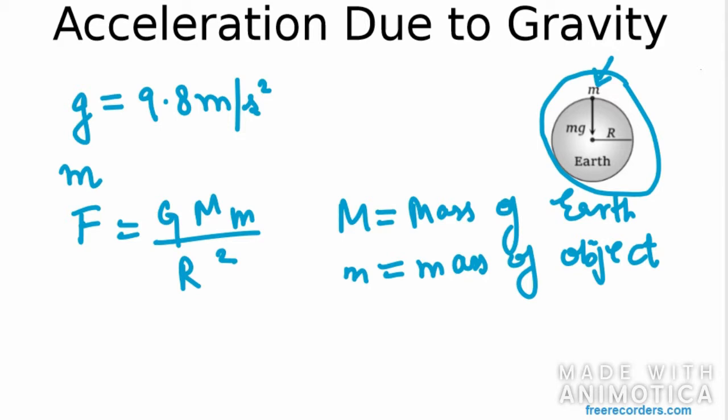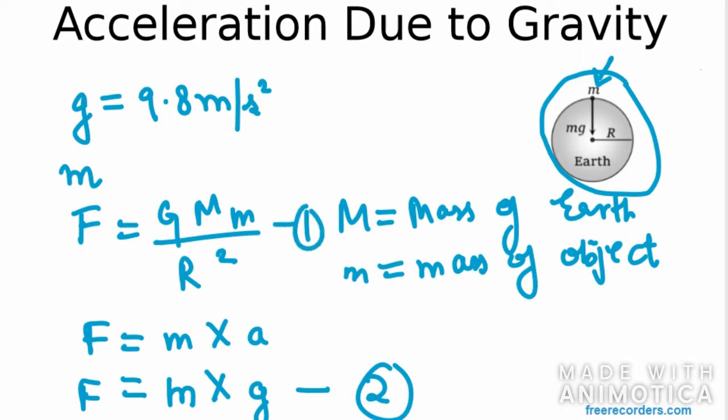As you know, the force is mass into acceleration. Now, as we are considering acceleration due to gravity, that means it is a free fall. So in the condition of free fall, we replace a with g. That means my second equation is m times g, and my first equation is G M m over R squared.